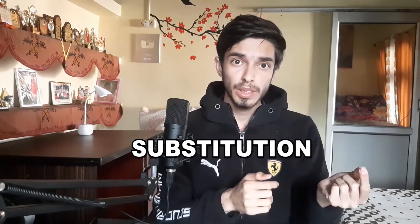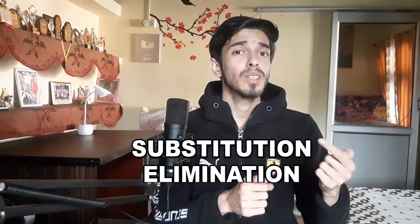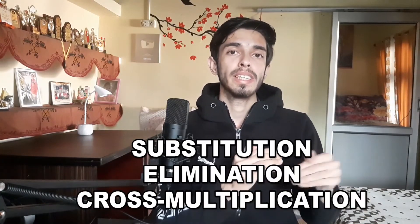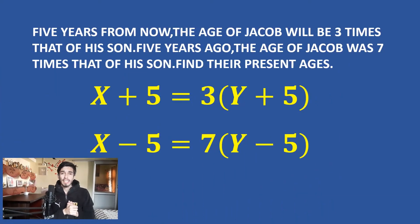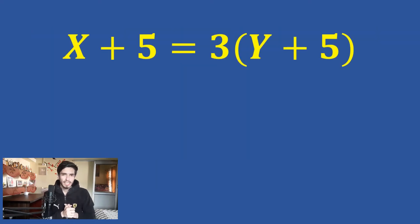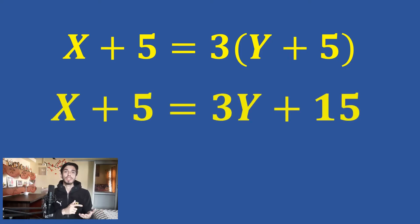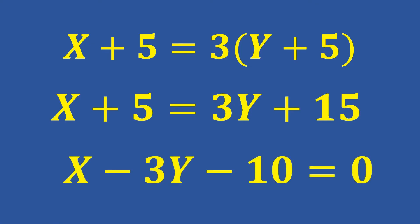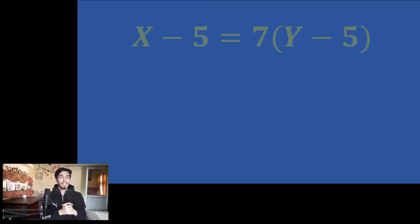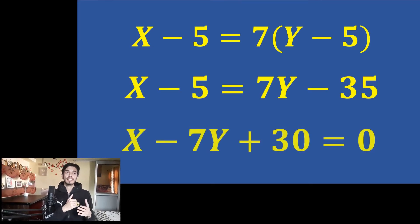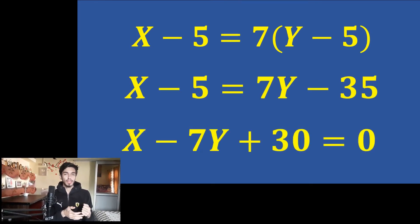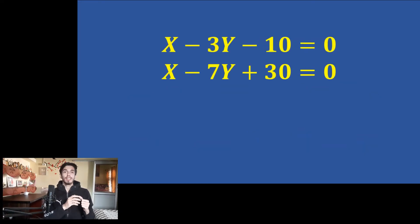There are many ways to solve linear equations — substitution, elimination, cross multiplication, or a mix. Here we can clearly see that subtracting the two equations will eliminate x, so I will use the elimination method. Simplifying the first equation gives x - 3y - 10 = 0, and simplifying the second equation gives x - 7y + 30 = 0.